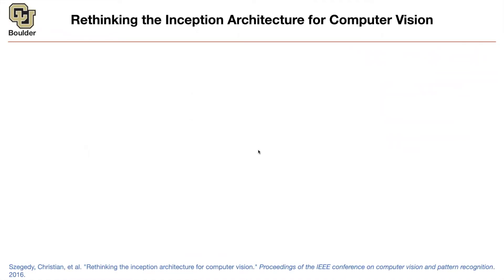So I guess you remember the inception architecture. It's the paper that we covered from Google and it was being called Google Net. So how are they rethinking it? One aspect is they introduced batch normalization, because that was a novel technique discovered after they wrote the paper. Therefore, they're just going to use that batch normalization technique in that paper. And what are some other changes that they make to their architecture?